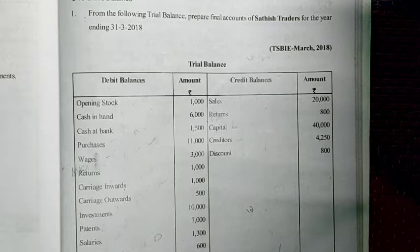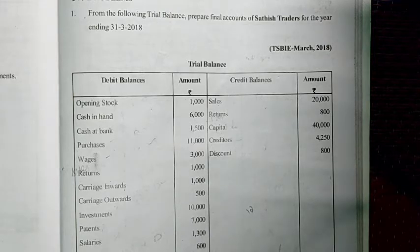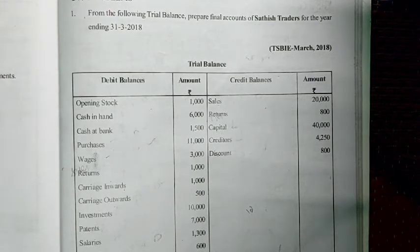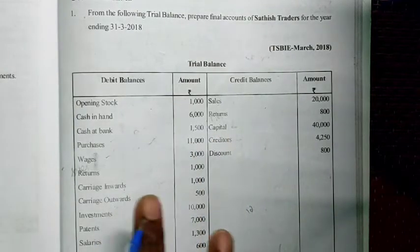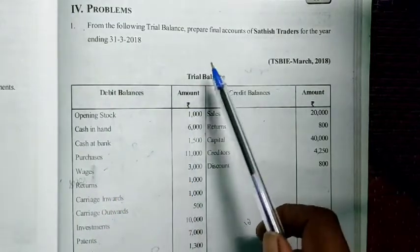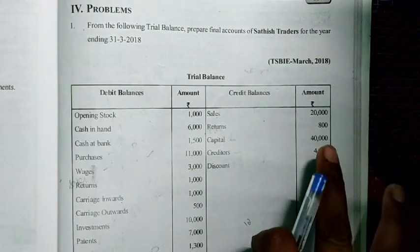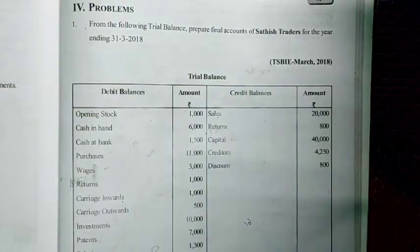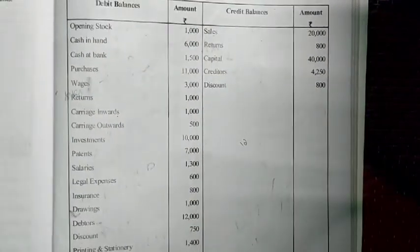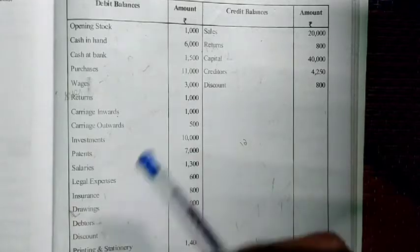For intermediate students, after deleting the 30% syllabus, you have only five adjustments. Based on those five adjustments only, I'm going to discuss the problems. The problem is from the Telugu Academy test book. The first question says: from the following trial balance, prepare final accounts of Satish Traders for the year ending 31st March 2018. He has given debit balances, credit balances, and adjustments.